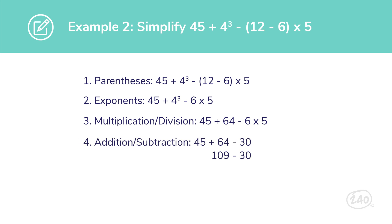Finally, we have addition and subtraction. Because we only have addition and subtraction left, we move from left to right like we're reading. 45 plus 64 equals 109. Then subtract 30 from 109 to get a final answer of 79. Need help remembering the order of PEMDAS? There are lots of mnemonic devices out there, but a popular one is "Please Excuse My Dear Aunt Sally."